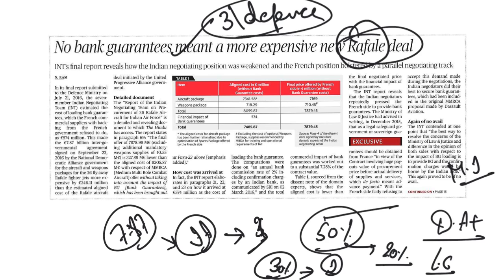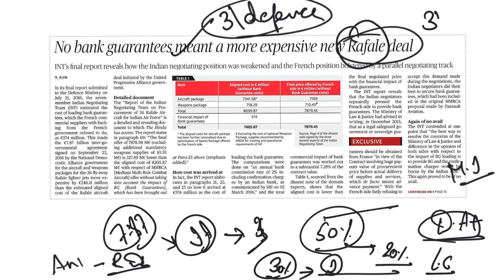Dassault Aviation, the makers of Rafale, were given a choice to select any Indian company for this offset clause investment. They chose Anil Ambani-led Reliance Defence Limited. The opposition alleged the government was not being transparent about the deal price, claiming the government was paying thrice the amount per aircraft, and that the choice of Reliance Defence was unfair as it had no experience in aerospace manufacturing.